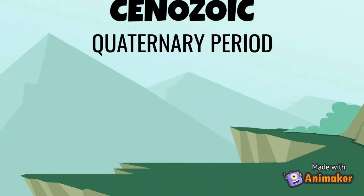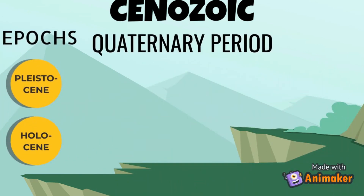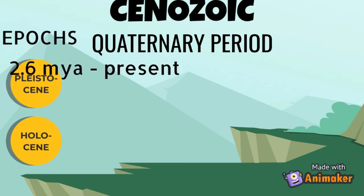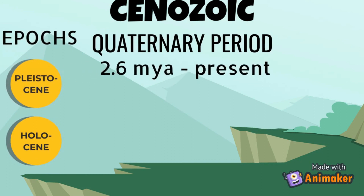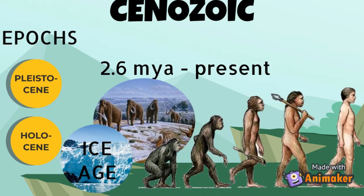The Quaternary period covers the Pleistocene and Holocene epochs and is the most recent. It encompasses 2.6 million years ago to the present day. It has been characterized by several periods of glaciation. During this period, the evolution of man was apparent.